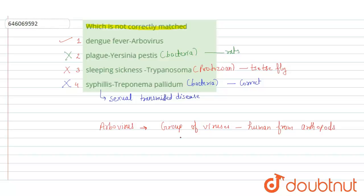Dengue fever, or simply dengue, is a mosquito-borne viral disease. So it is spread specifically through mosquitoes, which are a subset of arthropods.